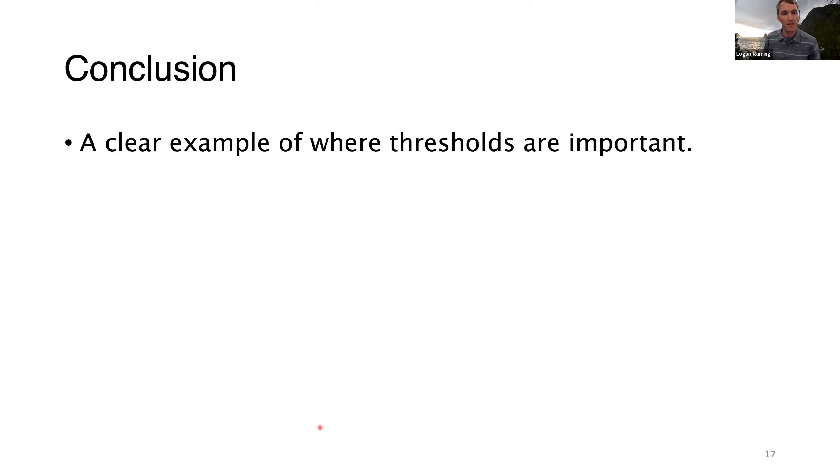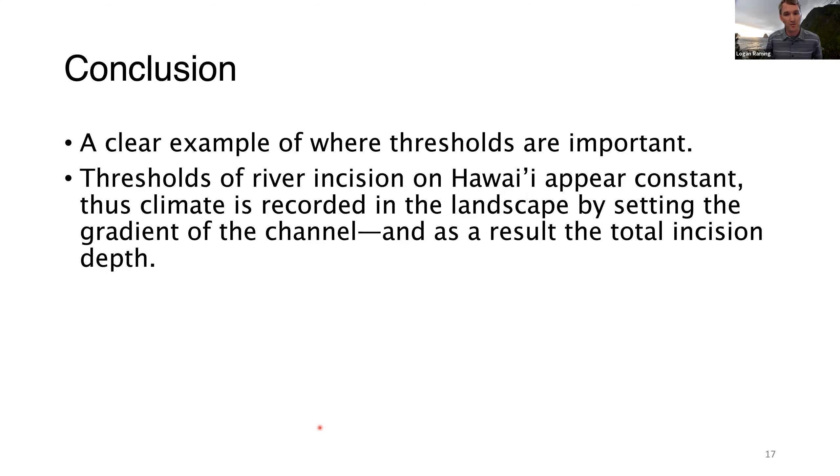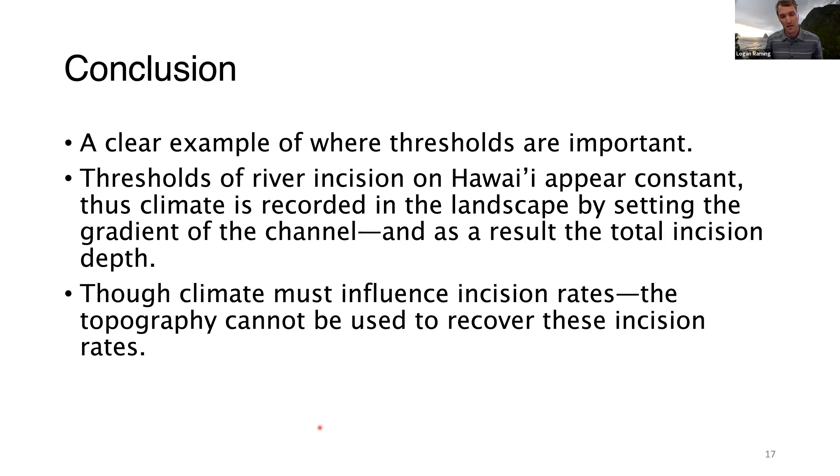This also means that incision rates from threshold conditions have little meaning. I plotted time-average incision rate against the age of the shield volcano, and you can see incision rates are correlated with time. This represents mean incision depth divided by time, which is what we'd expect if incision happens rapidly and we reach a threshold state early. In conclusion, Hawaii provides a clear example where thresholds of river incision are important. Thresholds appear constant, thus climate is recorded by setting the gradient of the channel and the total incision depth. Although climate must influence incision rates, the topography cannot be used to recover these incision rates.